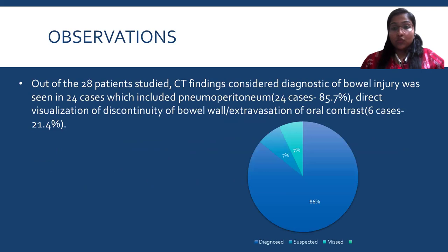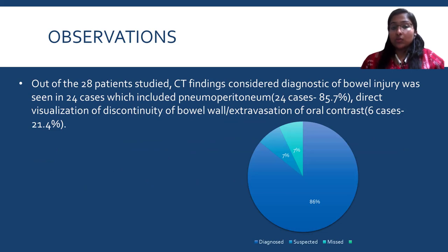Out of the 28 patients, CT findings considered diagnostic of bowel injury were seen in 24 cases — that is 85.7% — which included pneumoperitoneum or direct visualization of discontinuity of bowel wall, or extravasation of oral contrast in six cases, that is 21.4%.